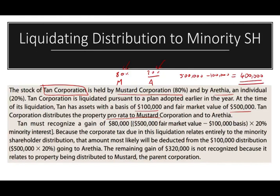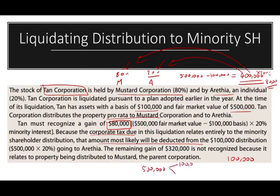Now, what's going to happen? Some of that gain goes to M — 80% of it to M — and 20% of it to Arethea. What's 20% of the $400,000 gain? That gives us $80,000. So the amount that goes to the minority interest — the individual — is $80,000. In dollar terms, out of the $500,000 being distributed, $100,000 goes to the minority interest (20%) and $400,000 goes to M Corporation, the controlling interest.